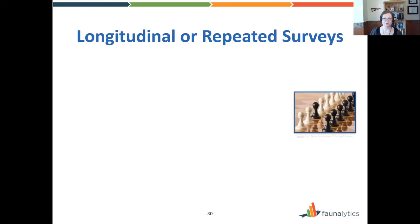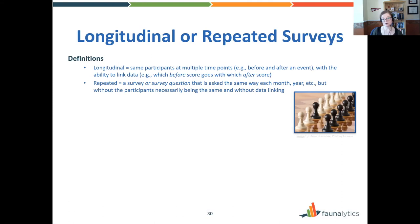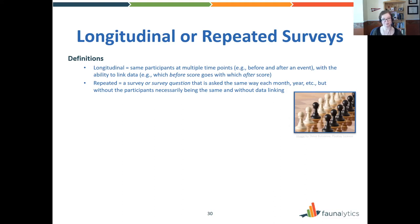Next, let's talk about longitudinal or repeated surveys. A longitudinal survey is when you survey the same participants more than once — for instance, before and after an event — and you can link their data from before to after. A repeated survey, on the other hand, is a survey or question asked the same way multiple times in different surveys, but without the participants necessarily being the same or having linked data. An example of that is political polling — the same questions are used over and over, but there's no implication that the participants are the same each time.